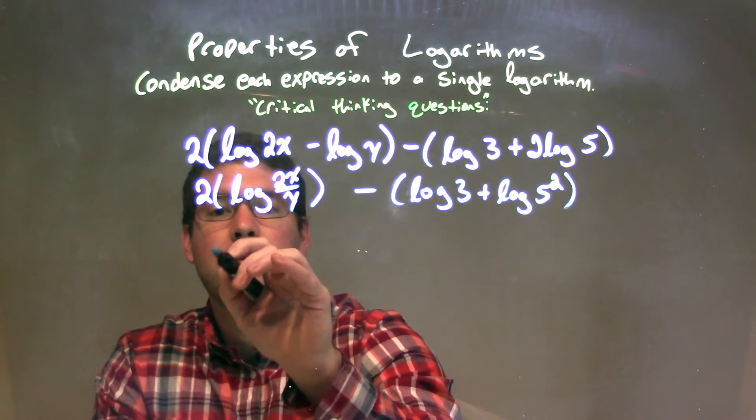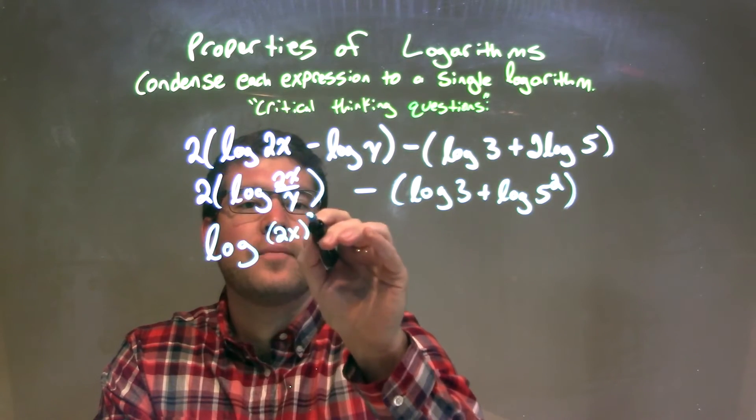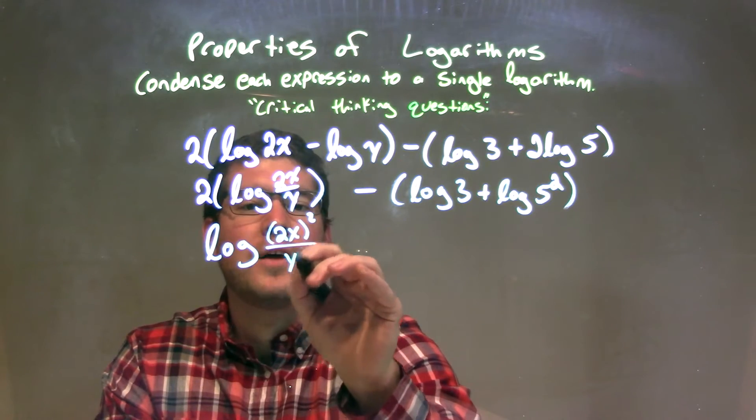So we have log here of, well, 2x all squared over y squared.